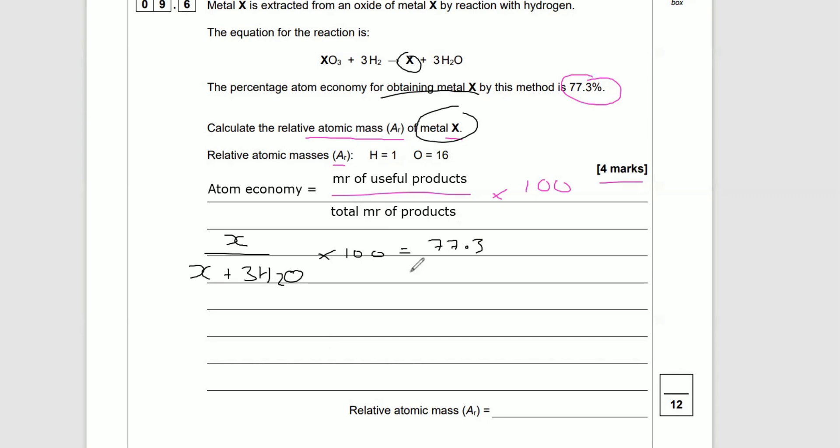If that's the case, pause the video, have a go, and I'm going to go through the answers. So this is how I did it, but there are many ways to skin a cat. First up, I am going to calculate what 3H2O is. Well, we've got H is 1, O is 16.